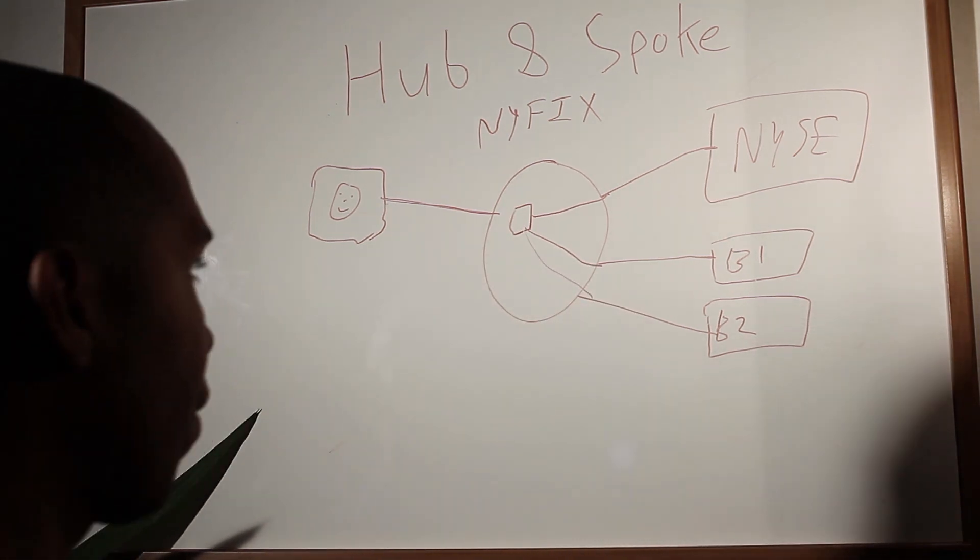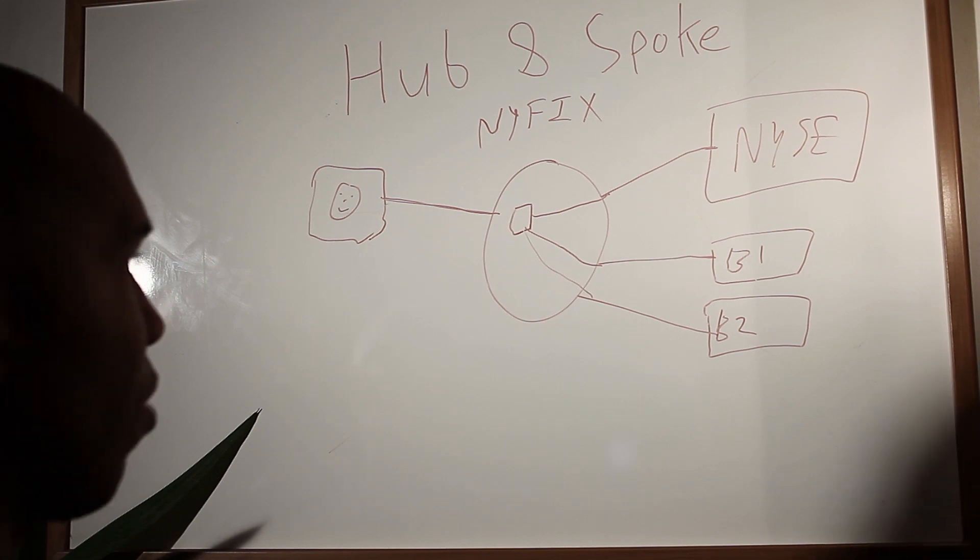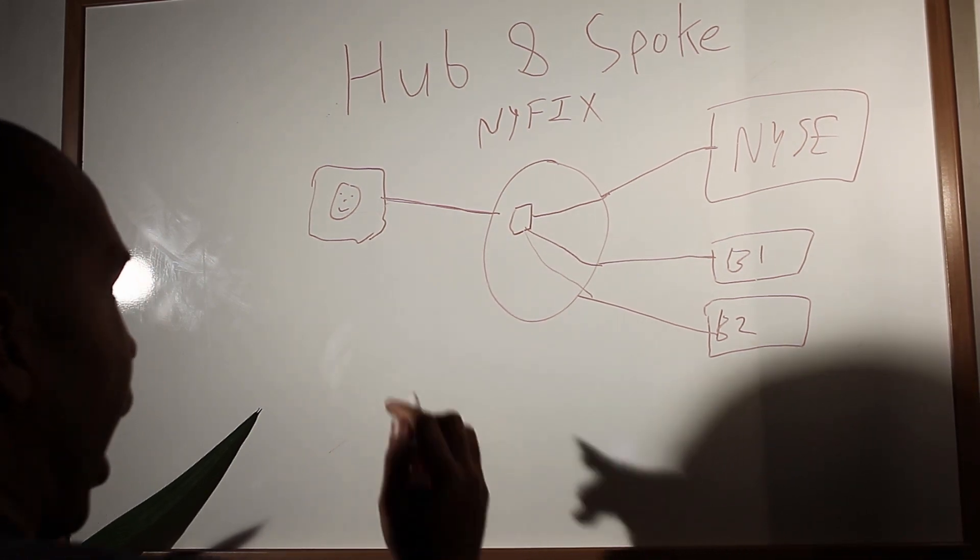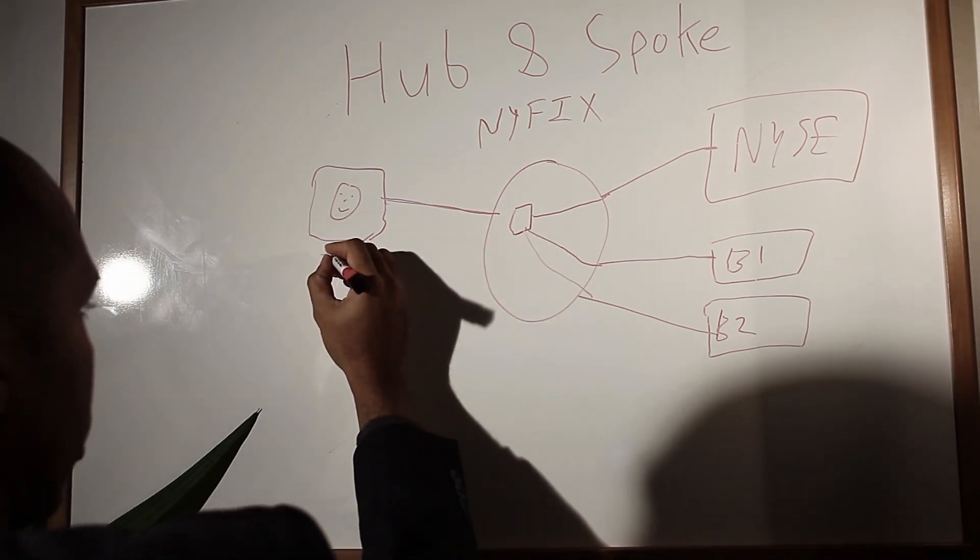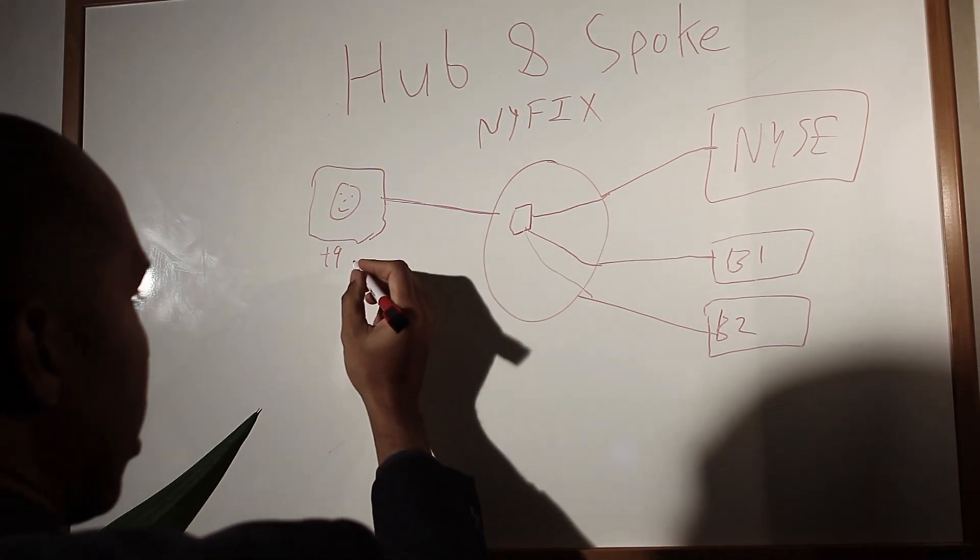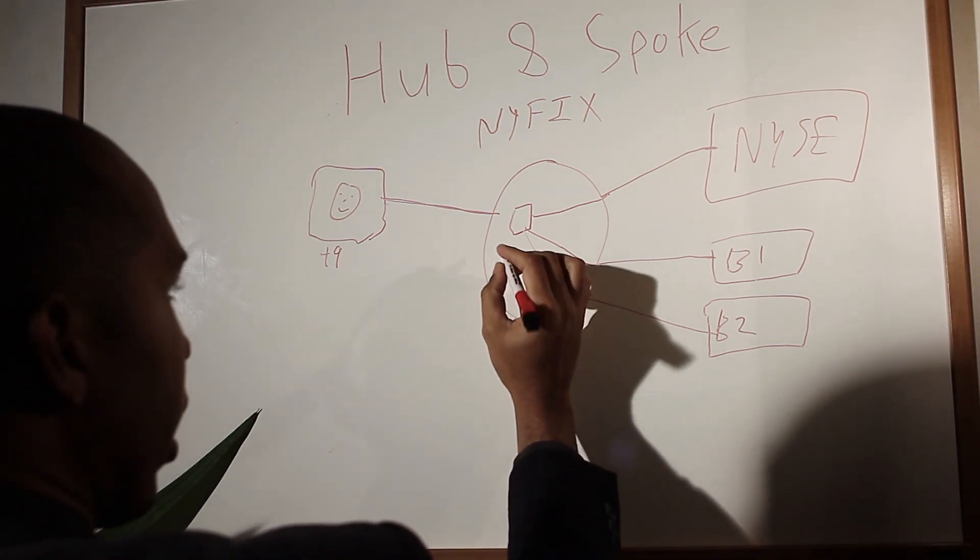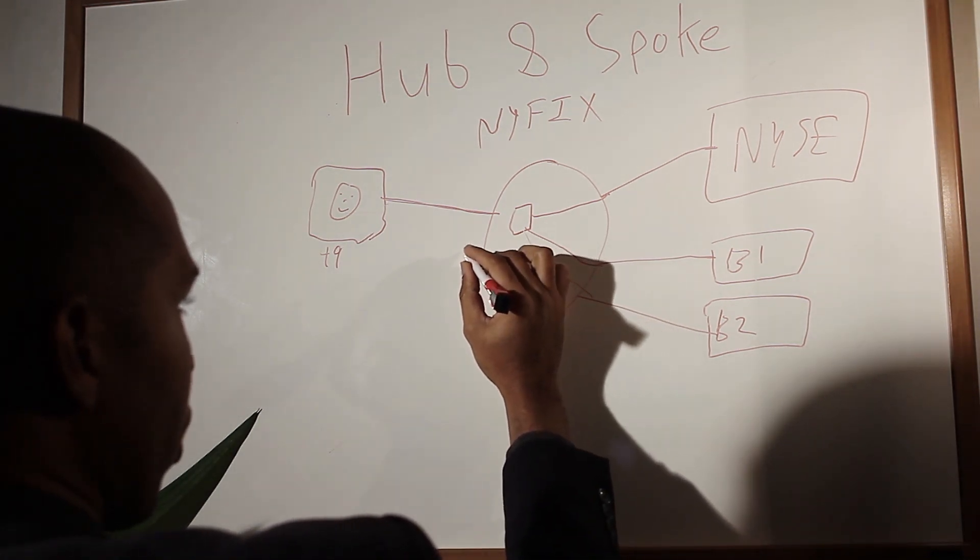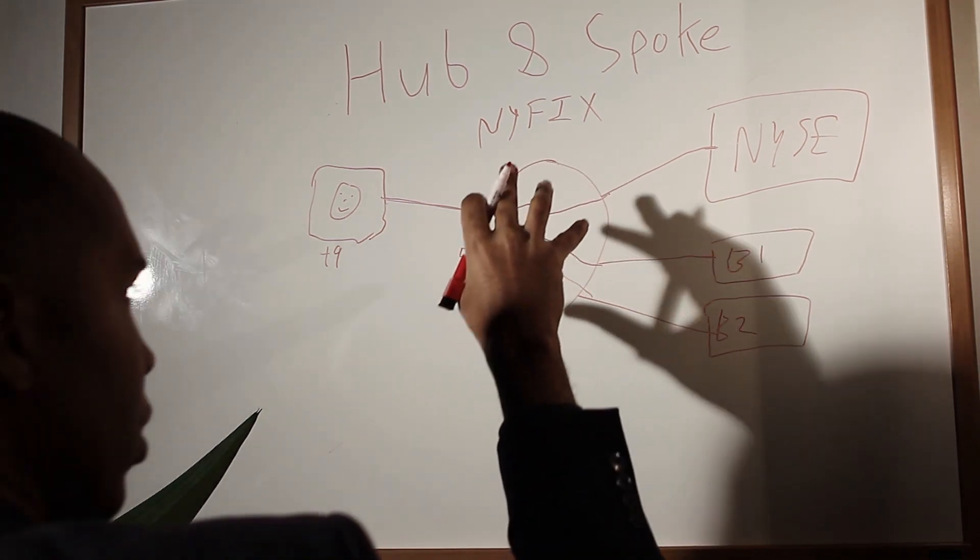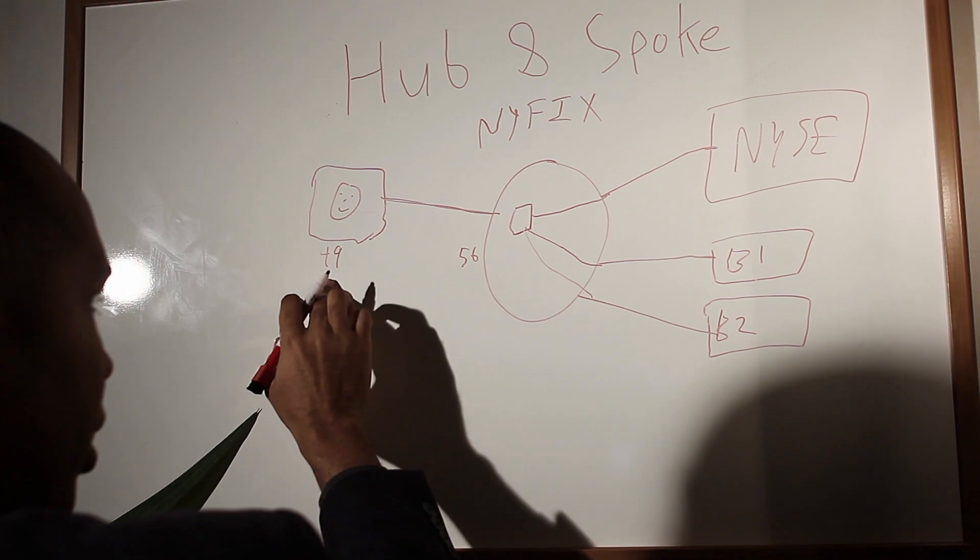Now, just to give you an idea of how you can do this kind of routing, the way that this would work in the FIX world is I would have a direct connection here. So I would be sending tag 49 to identify myself. And then I would be sending it to a 56, which is over here. So 56 is the comp ID for this network that I'm sending my order to, 49 is me.